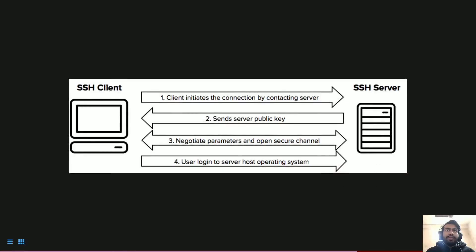SSH also uses something called channels. If you create one SSH connection from your system to a server and then want to create another connection to the same server, it will not open two separate connections — instead it uses a single channel and handles multiplexing on its own. SSH handles channel multiplexing automatically.